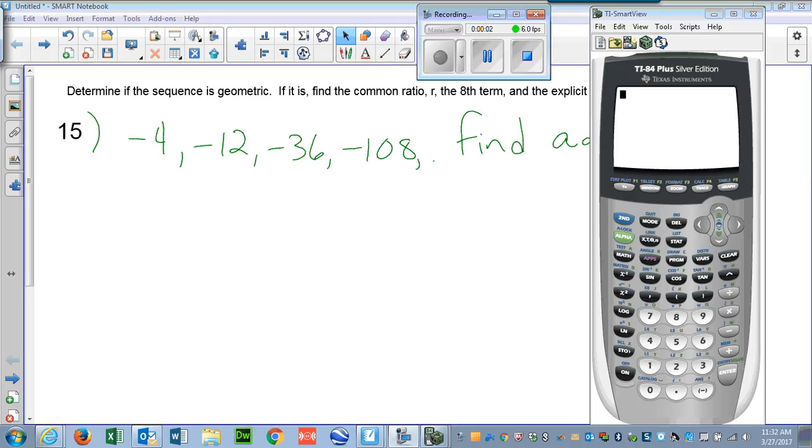Okay, we're going to do the same thing again for this problem. This is problem number 15 from the same assignment. The first thing we have to do is determine if our sequence is geometric, and if so, find the common ratio, the eighth term and the explicit formula. We also have to find a sub 9 when we're done.